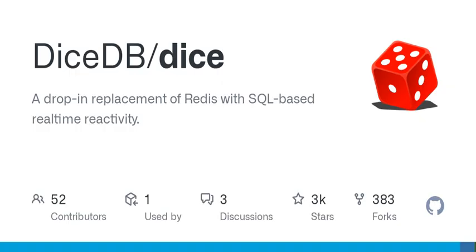To start using DiceDB with Docker, simply run the command: docker run dicedb/dice-server.